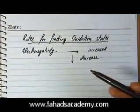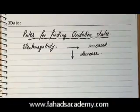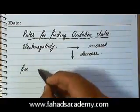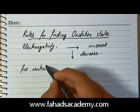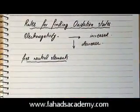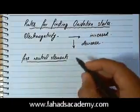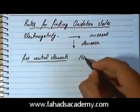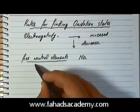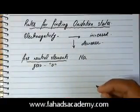That basically sums up the rules for electronegativity across the periodic table. But how does that translate into finding oxidation states? The first rule is for free neutral elements. What is meant by 'free' is that the element is not bonded to another element. For example, sodium has no charge, so its hypothetical charge or oxidation state is zero. Free elements always have an oxidation state of zero.